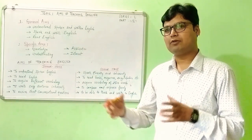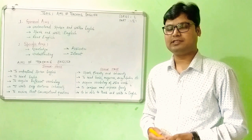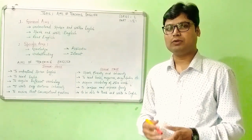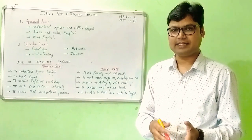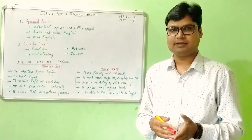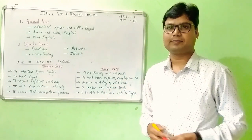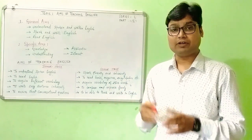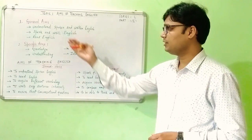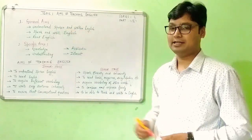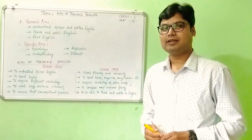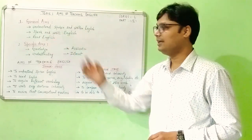General aims are set for a longer period of time, say after completing school education. School education starts from junior stage and ends up to senior stage, that is from class 6 to class 12. After completion of school education, a child is expected to understand spoken and written English, to speak and write English, and to read English.